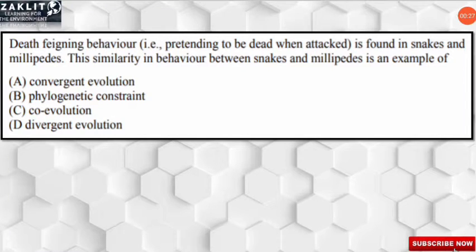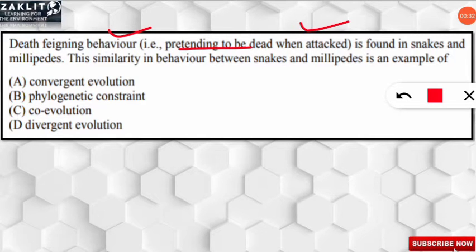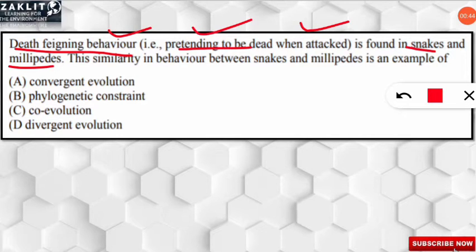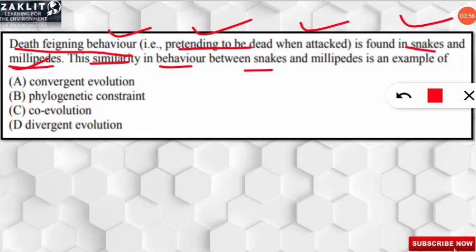The first question is about death feigning behavior — that is, to pretend to be dead when attacked — which is found in snakes and millipedes. From the question, we get to know the term 'death feigning behavior': when any organism pretends to be dead when attacked by a predator to avoid the attack. The question asks what kind of ecological phenomenon this similarity between snakes and millipedes represents.